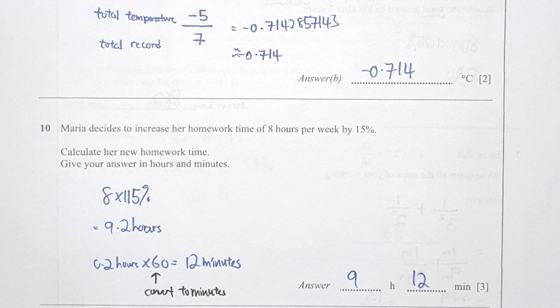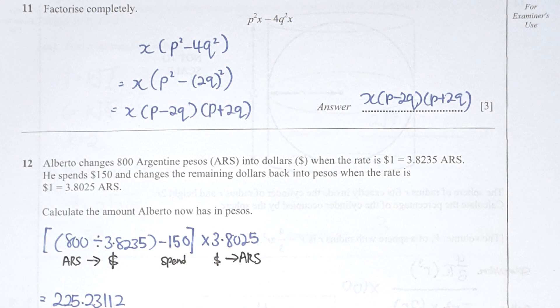You get 9.2 hours. Since they want the answer in hours and minutes, the 0.2 is required to be converted back to minutes: 0.2 times 60 minutes gives 12 minutes.